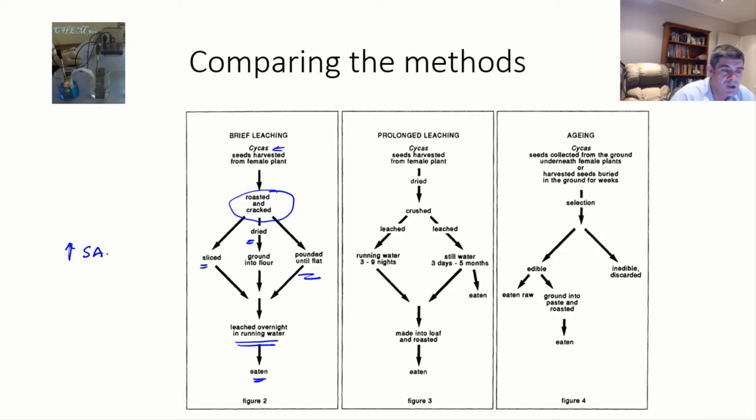Prolonged leaching occurs where we start with the same sort of processes, so a bit of drying occurring first of all on the heat. Then the seeds are crushed and then the leaching is carried out for now a much more substantial amount of time.